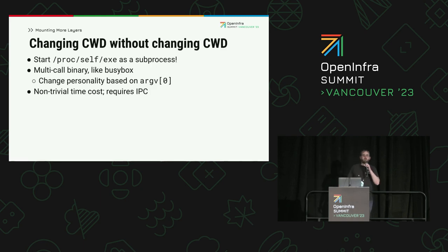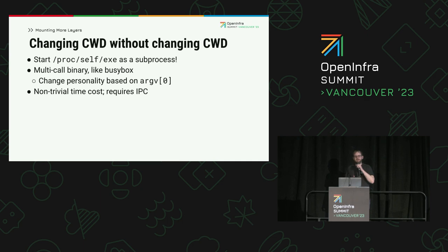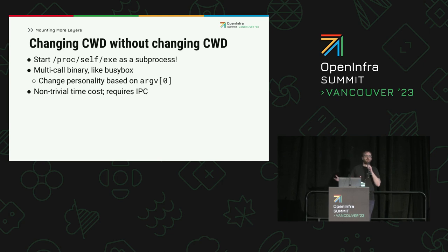The Moby project historically took the approach of starting itself as a child process, where the child changes working directory, mounts, and exits. But starting a whole new Go process from scratch dominates the time to issue the mount syscall, and we have to deal with moving data and results across a process boundary. There's got to be a better way.